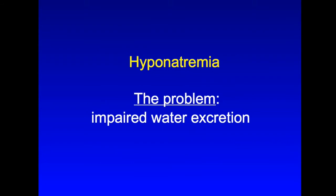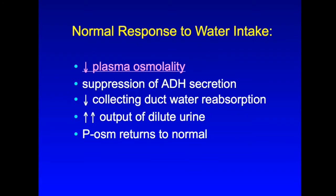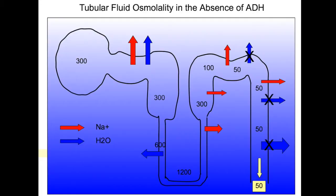The important thing to remember about hyponatremia is that it can develop only when there is a problem getting rid of water. When a normal person drinks water, their plasma osmolality goes down just a little — 1 to 2 percent, maybe from 285 to 282 — and even that small decrease is enough to suppress ADH secretion. Water reabsorption in the collecting tubules is then impaired, water stays in the tubules, and the result is a large output of very dilute urine, which returns plasma osmolality to normal so that hyponatremia does not occur. So the ability to excrete free water — water without solute — is crucial to preventing hyponatremia.